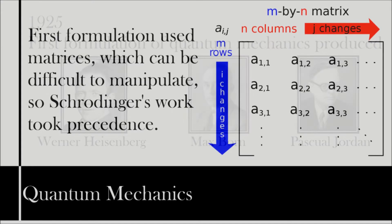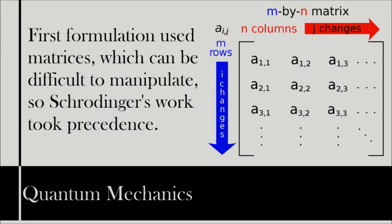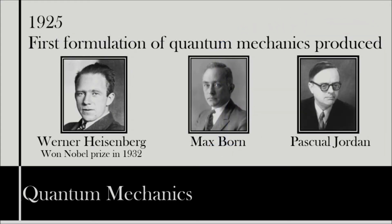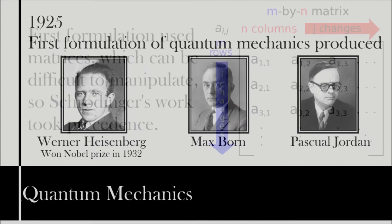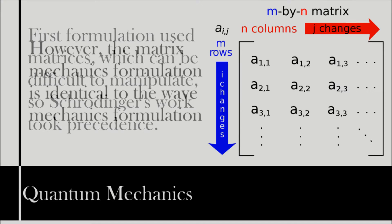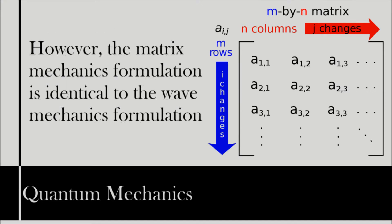Unfortunately, they did so using matrices, which are harder to manipulate, and while they were indeed correct — Heisenberg won the Nobel Prize in 1932 for this work, though he was apparently unhappy that Born and Jordan were not honoured along with him — it was not widely used. This matrix mechanics was, nevertheless, the first complete and correct definition of quantum mechanics.